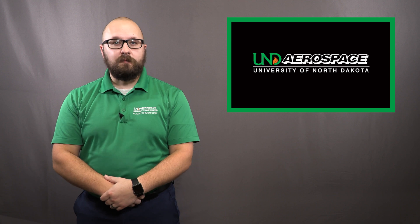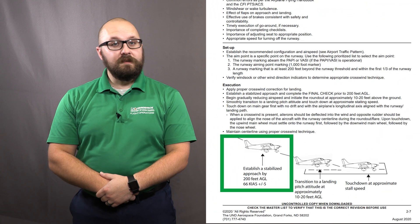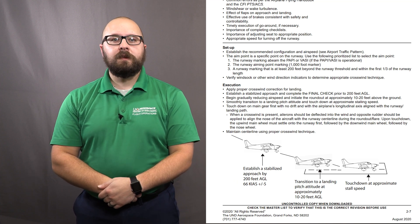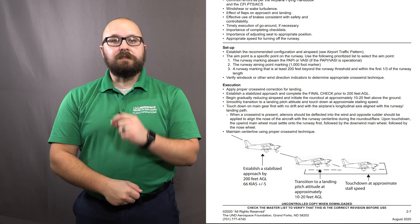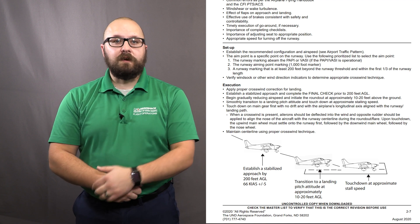We all know that the Piper Archer stabilized approach airspeed is 66 plus or minus 5. Organizationally, we have been doing a great job of hitting this airspeed on final. Where we are missing the mark is the deceleration as we approach the runway. To better understand this concept, let's take a look at the Piper Seminole POH.